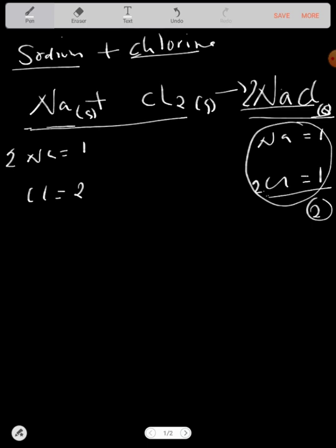Once you put 2 in front of sodium chloride, sodium has also become 2. That means even on the left you should put a 2 so that 2 times 1 gives you 2. Let's compare: 2 sodium, 2 sodium, 2 chlorine, 2 chlorine. It's balanced.